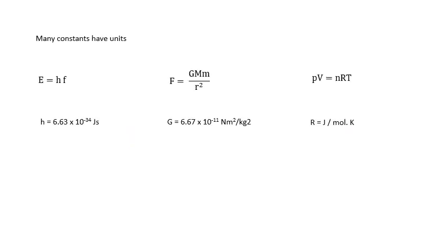Many constants have units. I mean, like pi doesn't have units because it's just a ratio, it's the ratio of circumference to diameter. But things like Planck's constant has got units, joule seconds. Big G, Newton's gravitational constant, has got units. And you can figure out what the units are by looking at the equation and rearranging the equation. I'll show you an example later on.